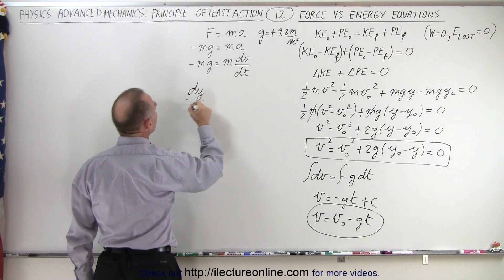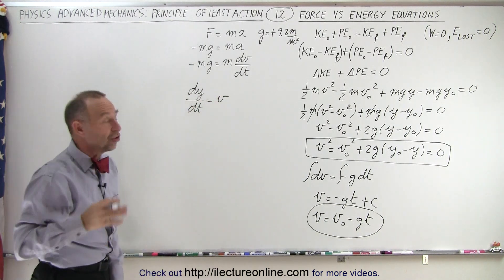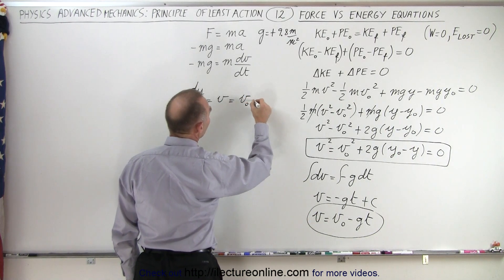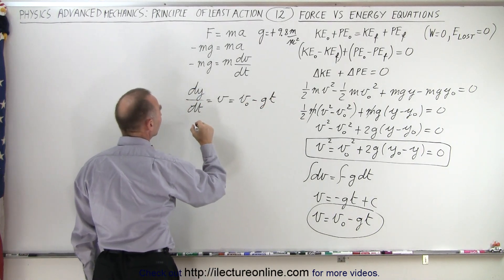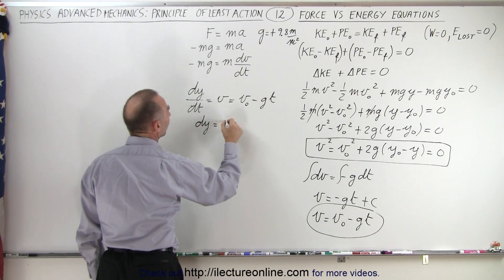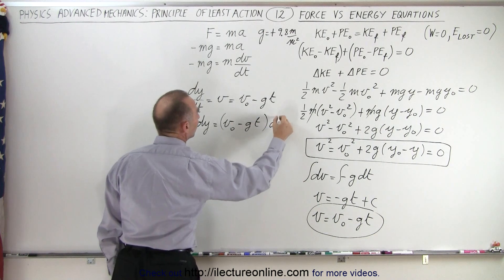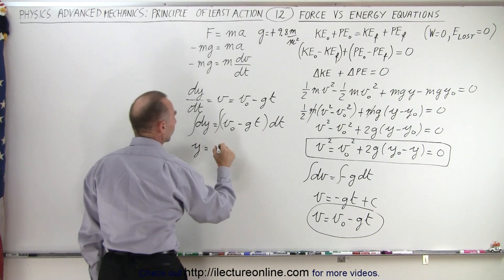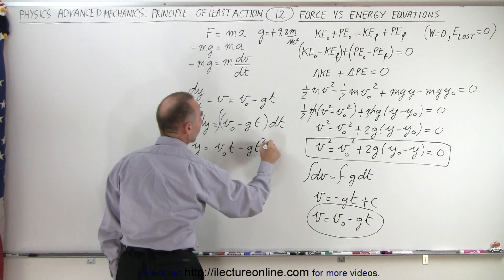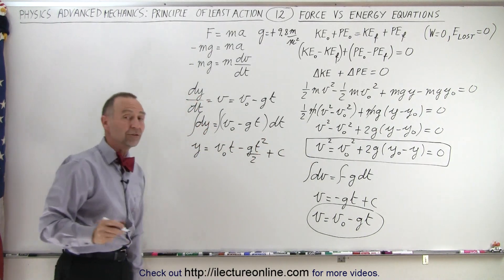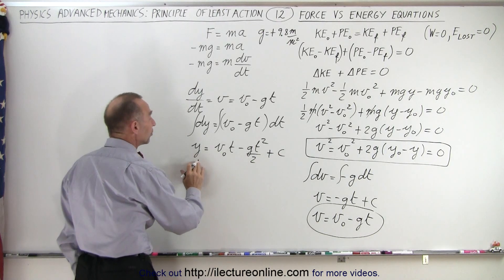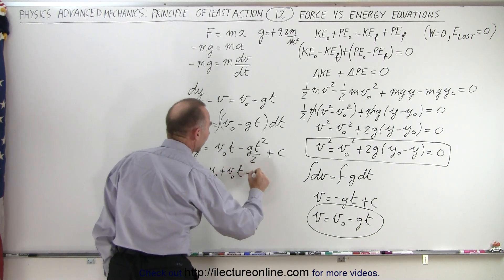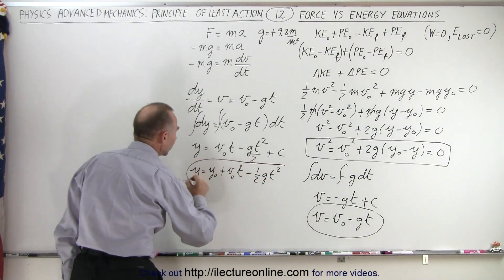We can derive a second equation by noting that dy/dt equals V, and V equals V_initial minus G times t. Moving dt to the other side gives dy equals V_initial minus G times t, multiplied by dt. Integrating both sides: the left gives y, and the right gives V_initial times t minus G t squared over 2, plus a constant of integration equal to the initial height. So y equals y_initial plus V_initial times t minus one-half G t squared.